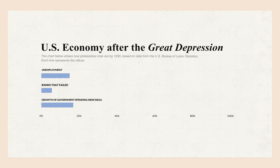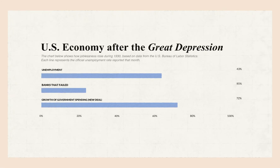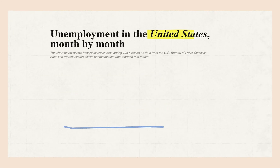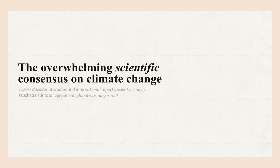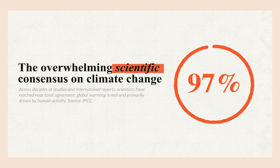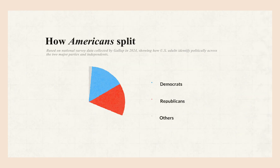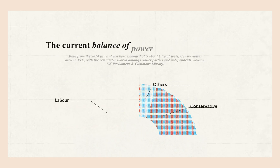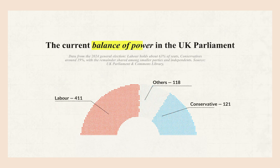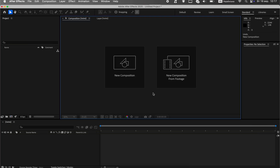Hello, everyone. Today, we're diving into the world of motion design to create a stylish infographic inspired by the popular videos from Vox and Johnny Harris. This style is known for its distinct vintage aesthetic, rich textures, and characteristic smooth yet choppy animation. We'll go step by step to build an animated bar chart from scratch in After Effects. Let's get started.